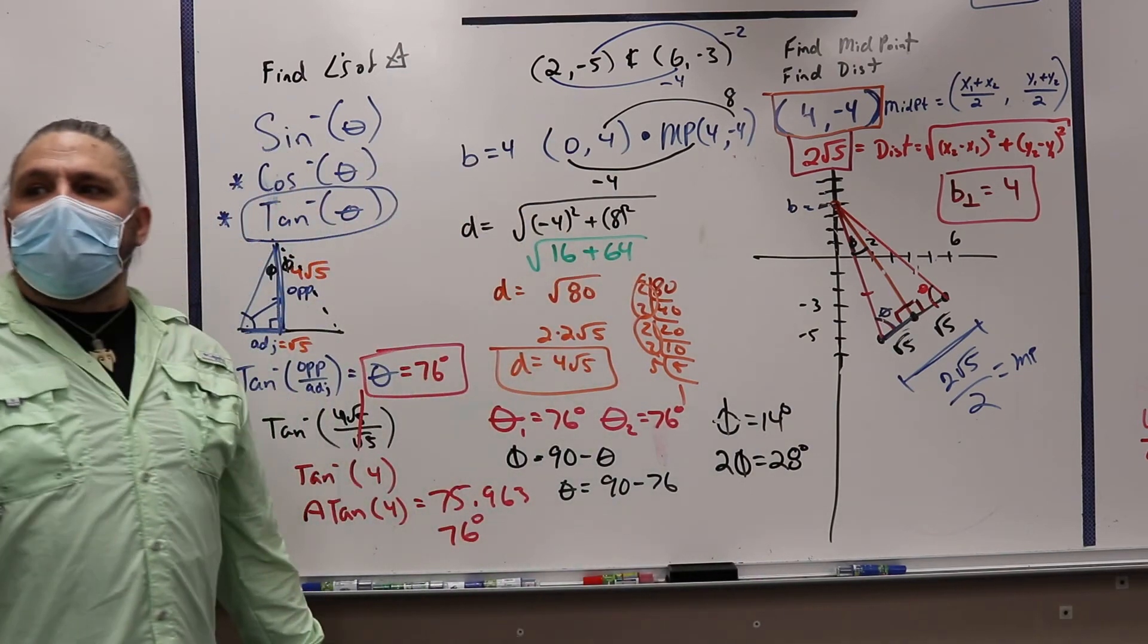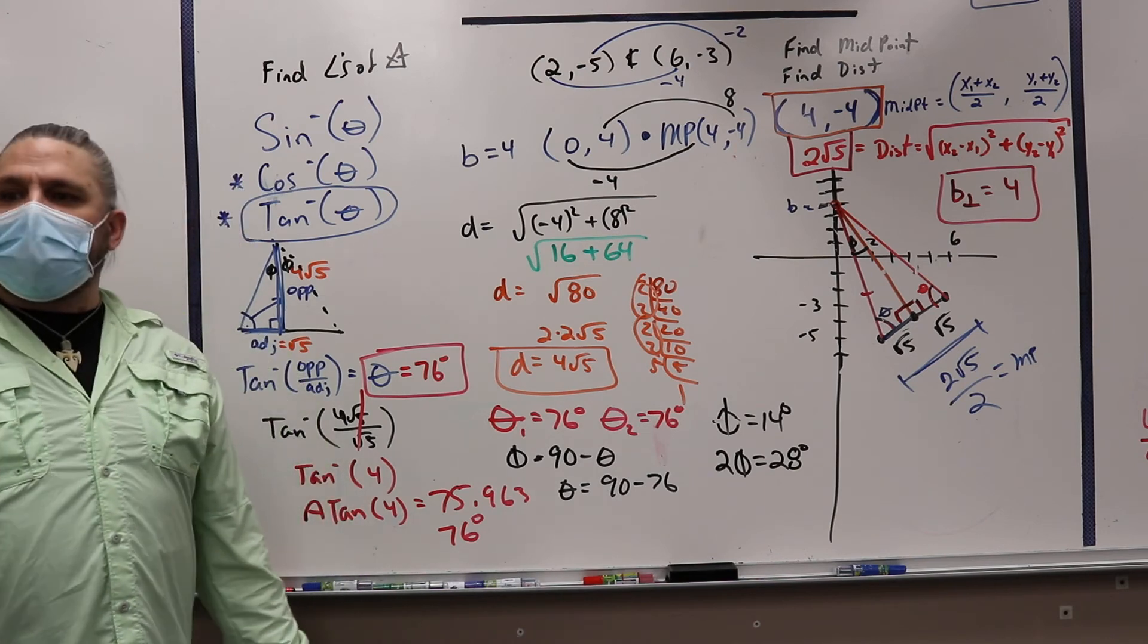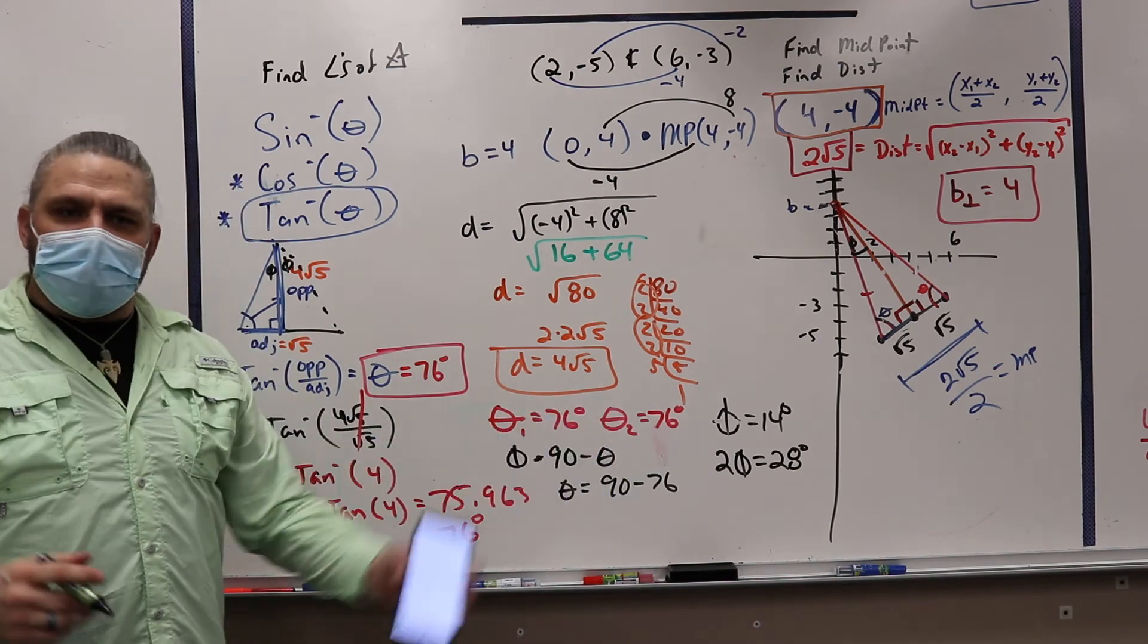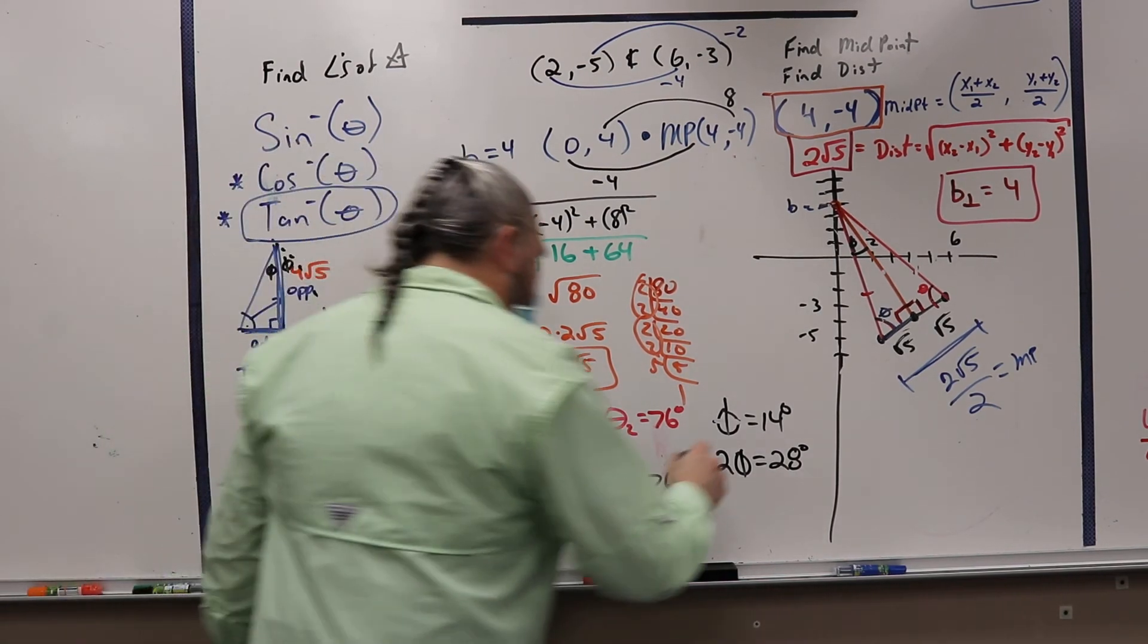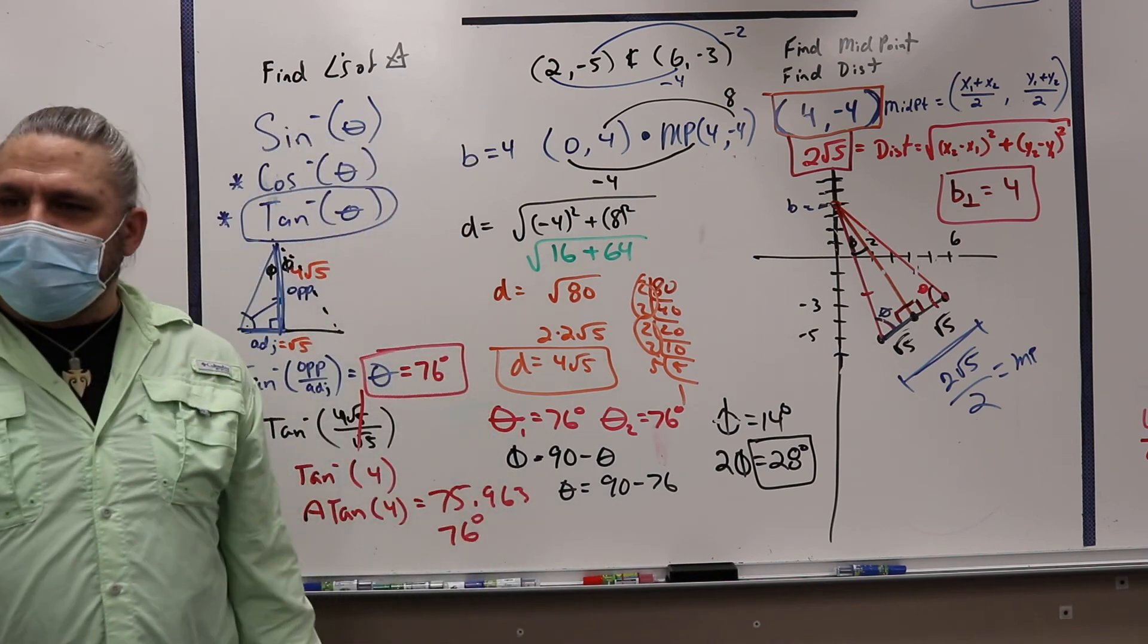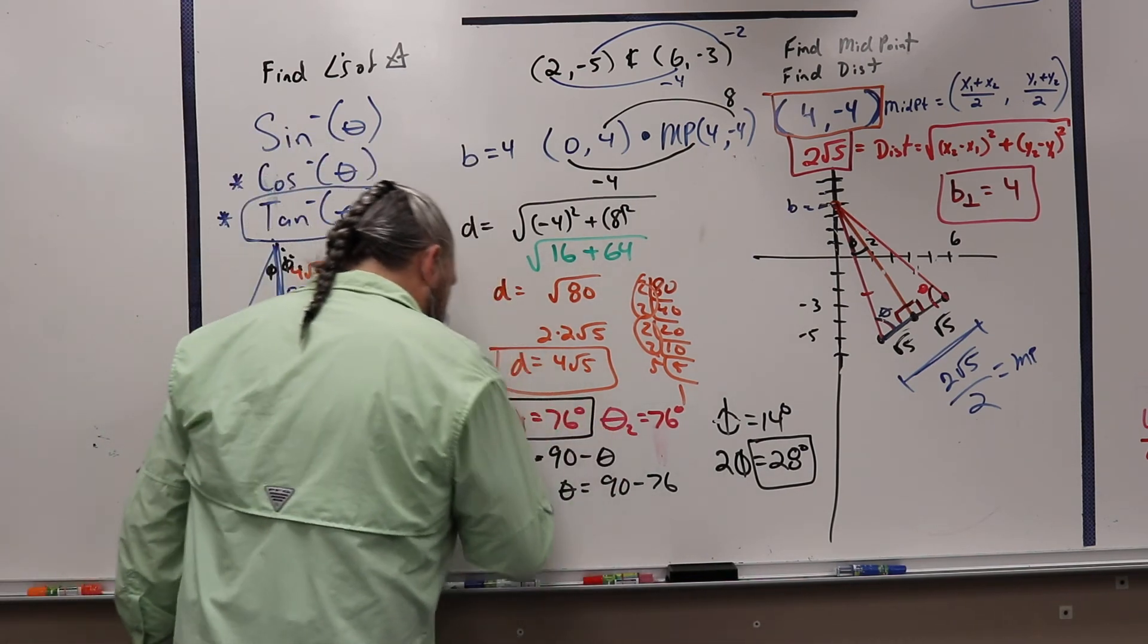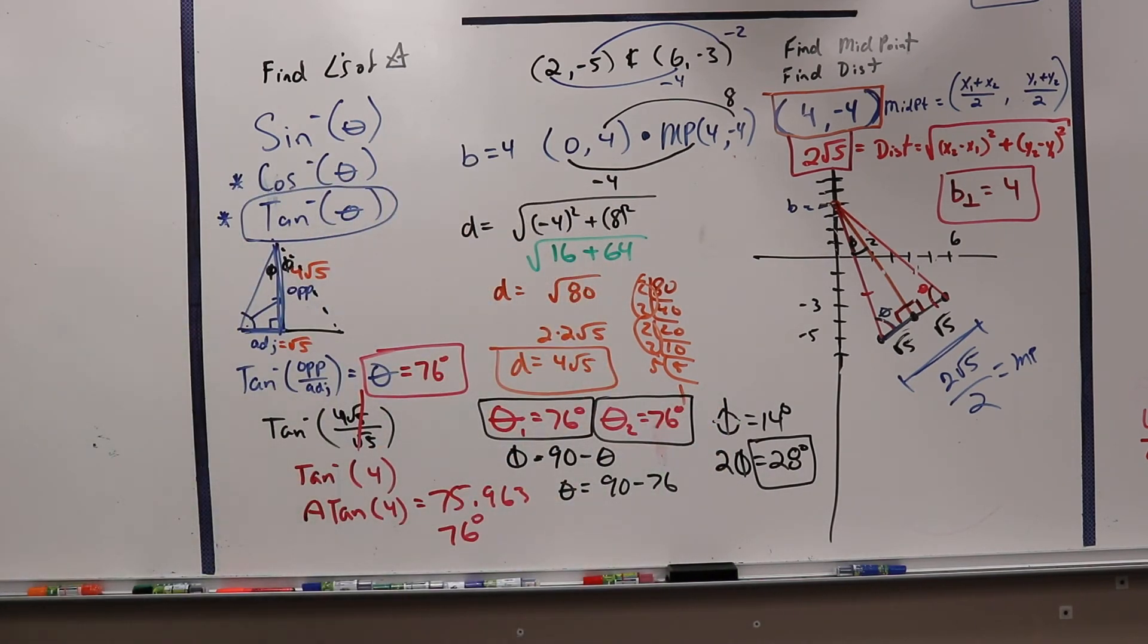And now when I add them all up, 28 plus 76 plus 76 should equal 180, right? Because the sum of the angles of a triangle should be 180 degrees. Correct? And it does. Right? So we found our angles. So we know that the peak of the isosceles triangle is 28 degrees, and the two bases are 76 and 76. Cool? Yeah?